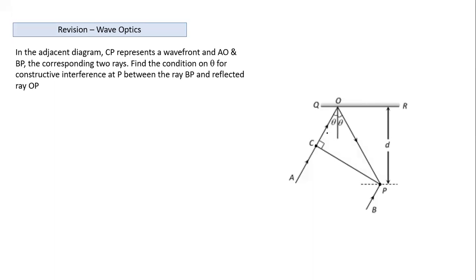What we need to do here is find the condition so that we obtain a constructive interference at point P. Constructive interference is based on path difference. We need to find out what is the path difference in the ray reaching from B and the ray which is starting from A and reaching point P after reflection.